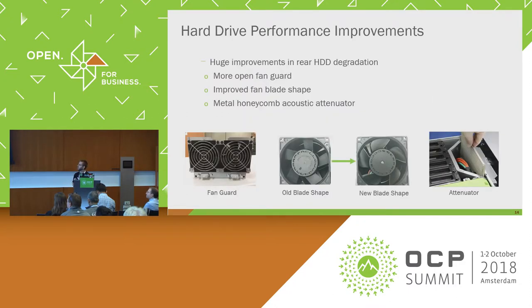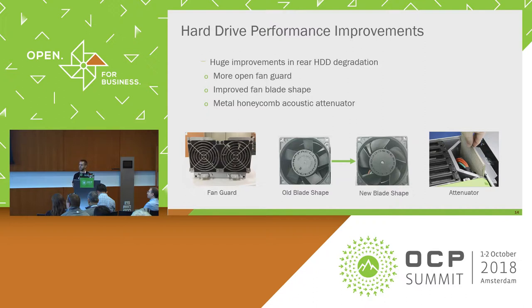To achieve those improvements, we made several mechanical and thermal design changes. We changed the fan guard on fans near the back row of drives — before it was stamped sheet metal with sharp flat corners that increased acoustic vibrations as air pulled through. We moved to a wire-shaped traditional fan guard, which reduced noise, combined with modifying the physical shape of the fan blades to also reduce acoustic noise. We also added an acoustic attenuator at the back of the chassis — a honeycomb mesh that attenuates acoustic noise coupling from the fans to the hard drives. These combined improvements significantly reduced hard drive degradation, especially under high PWM.